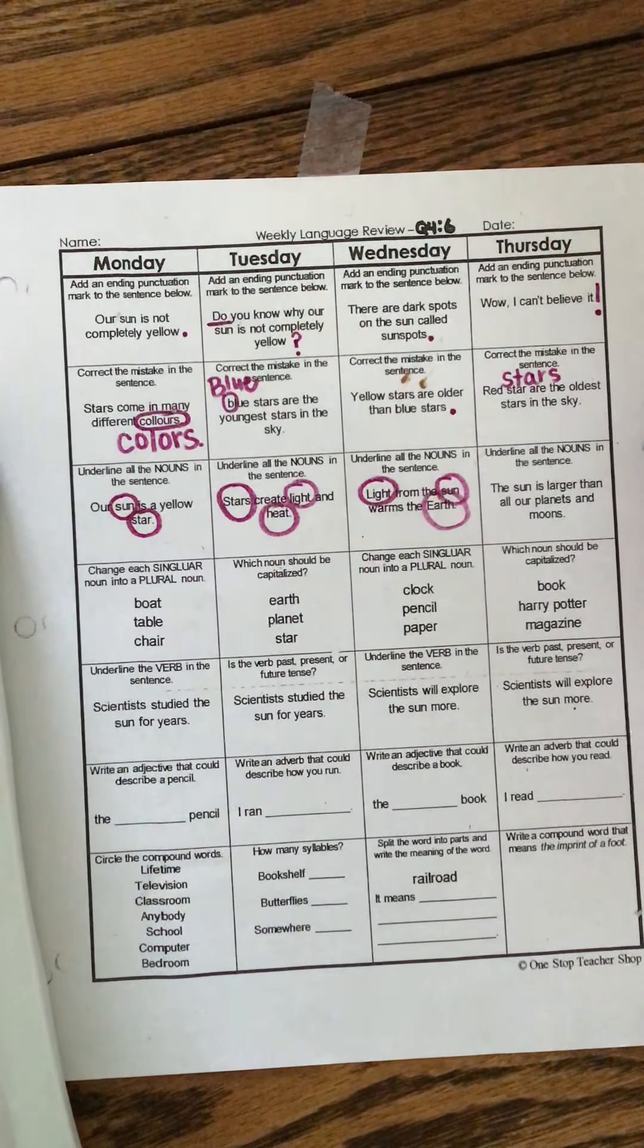Scientists will explore the sun more. We need to underline the verb, guys. They will do what? They will explore. Okay. So we already know. Let's circle that. Is the verb past, present, or future tense? The scientists will explore. So that's what we're looking at right here. Did they already explore? We've explored. We're exploring, or we will explore. Okay. We will. That means it's in the future. They haven't done it yet.